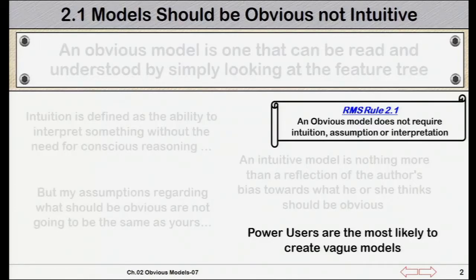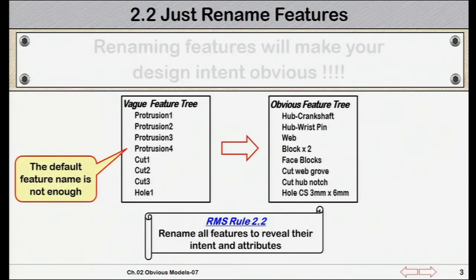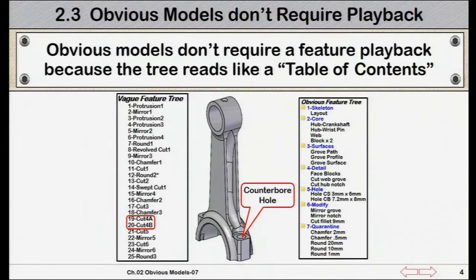Power users are often the worst culprits of creating intuitive solid models — the more experienced the modeler, the more likely they've developed an entire repertoire of shortcuts and workarounds. There is one single step required to replace intuition with conscious reasoning in a model: name the features that are made. Labels like 'protrusion,' 'sweep,' and 'cut' only describe the type of feature. By changing the feature name to include function and quantity, the feature tree becomes a valuable resource for understanding without needing to interpret it.